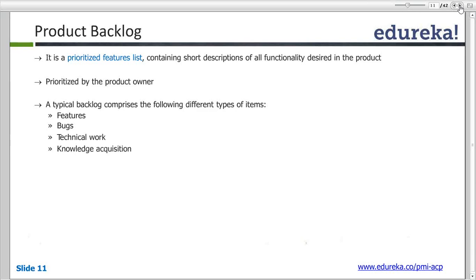For a typical example — going back to yesterday's example — if you realize that Josh is a common name and the username field level validation should change from two characters to more, this improvement request, ideally if you're working in Agile, would go back into your product backlog. The product owner would prioritize this in discussion with stakeholders, and if the priority is very high, it will be put as P1. Once your team is ready to pick new requirements, it would be picked up and worked upon.